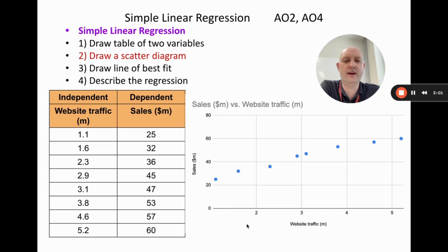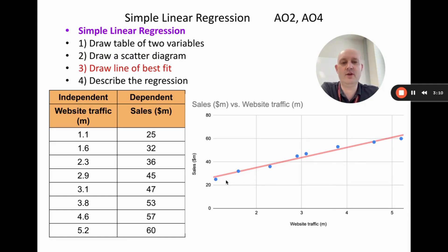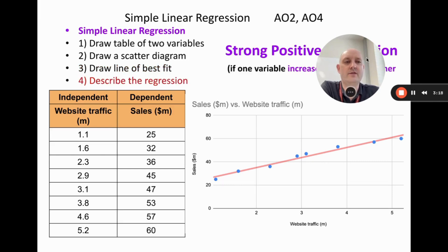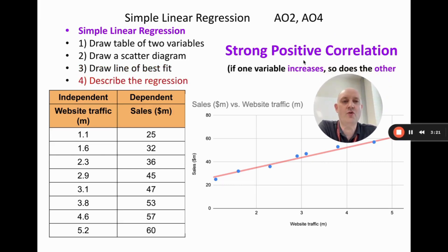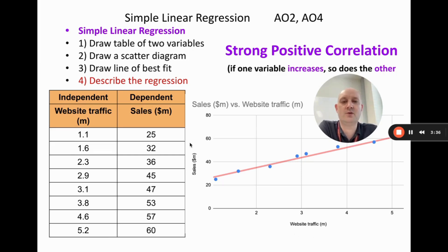Next we draw a line of best fit. I've used Google Sheets — I put the data in and added a trendline — and you can see we now definitely have some sort of positive relationship. The final step is to describe the regression. I'm calling this a strong positive relationship, or strong positive correlation. Positive correlation means if one variable increases, so does the other, which is clearly the case here: when website traffic goes up, sales go up.